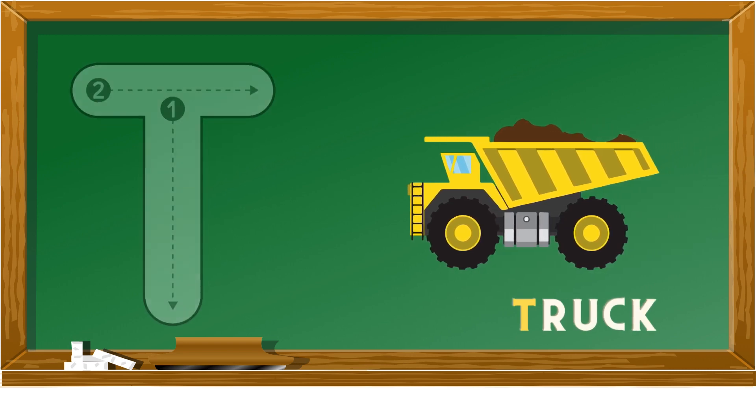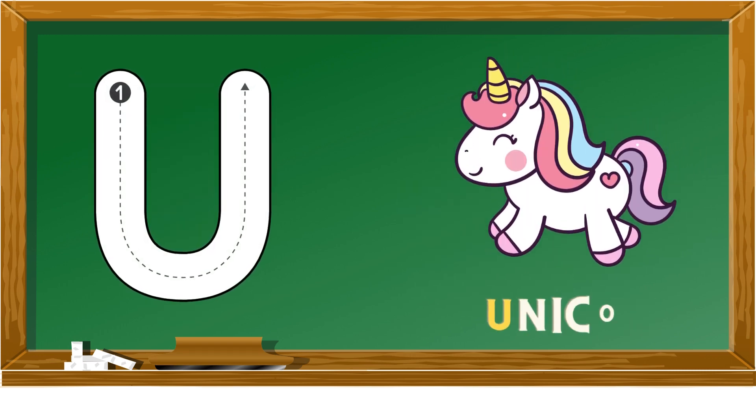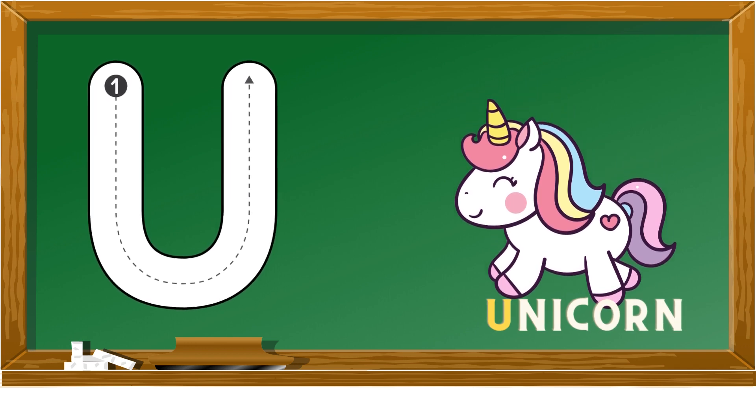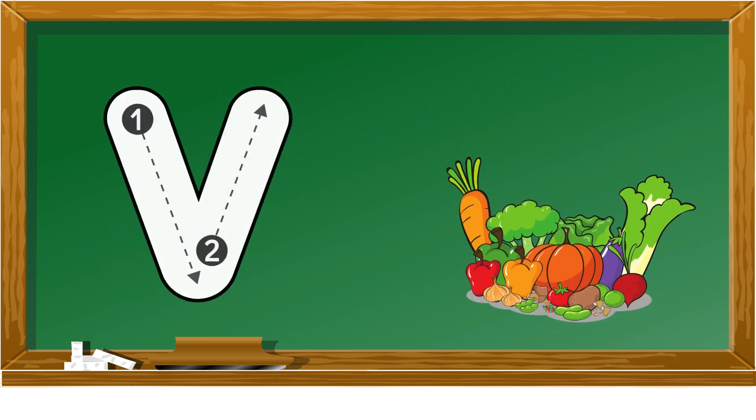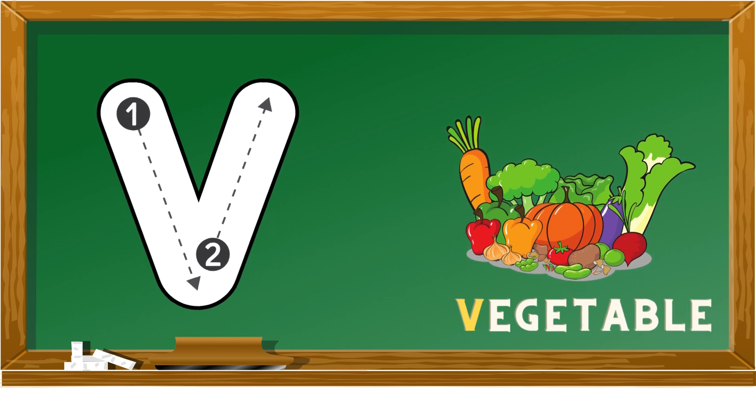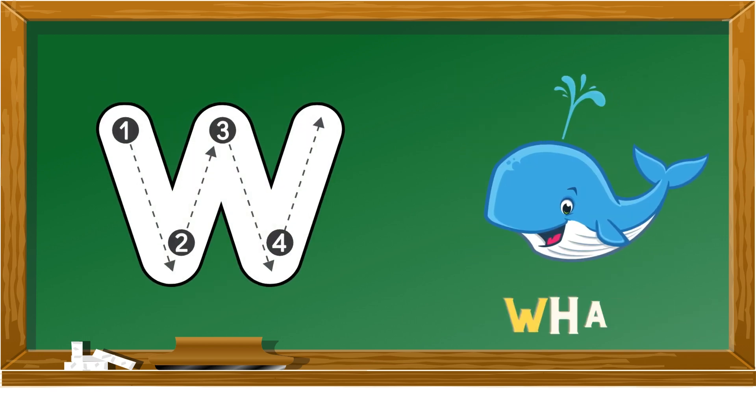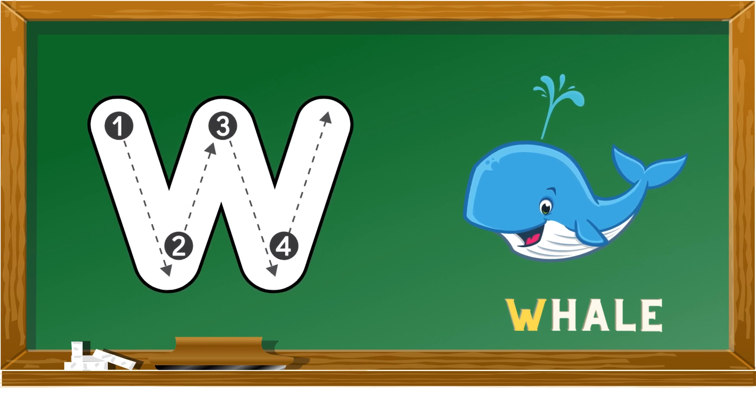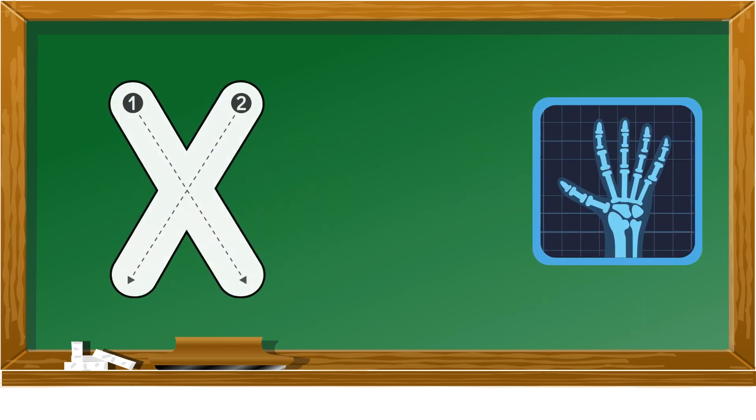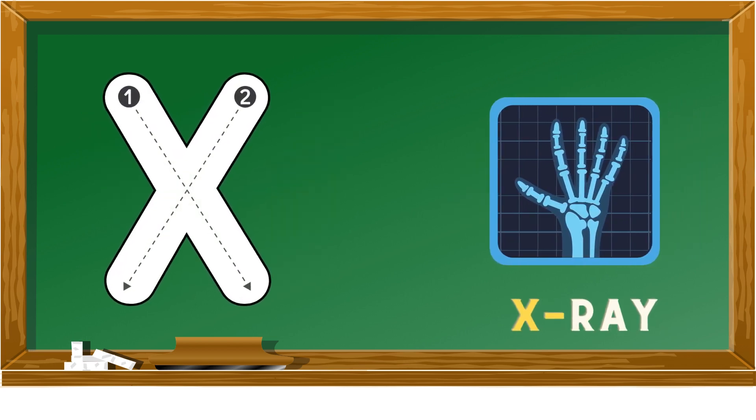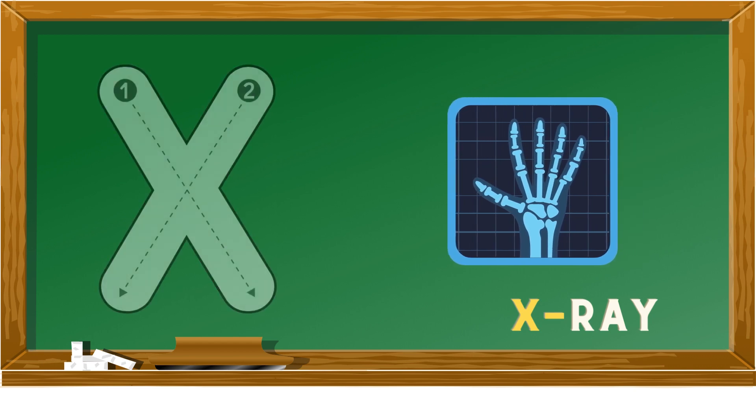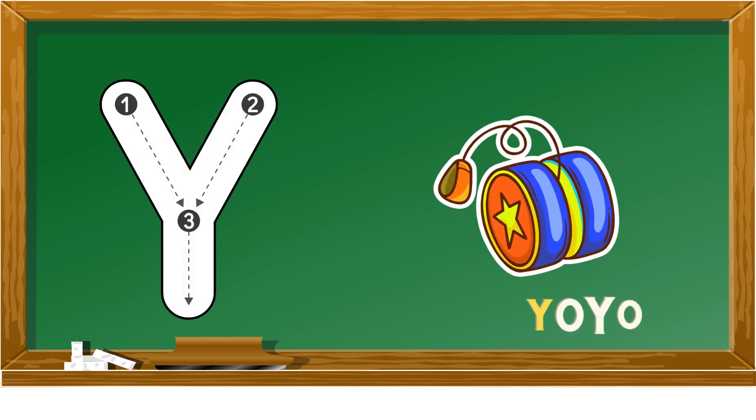U is for unicorn, V is for vegetable, W is for whale, X is for x-ray, Y is for yo-yo.